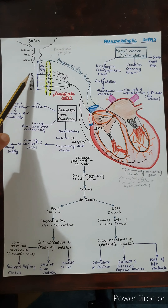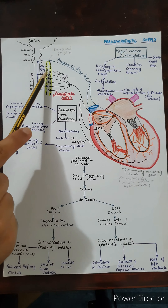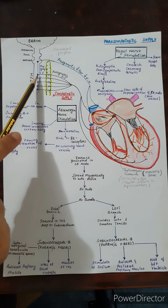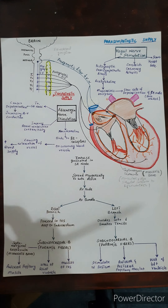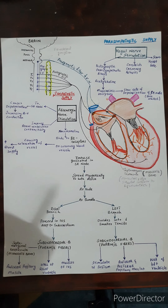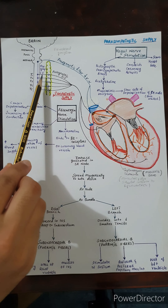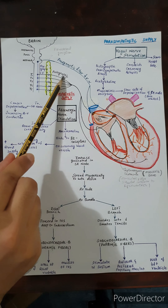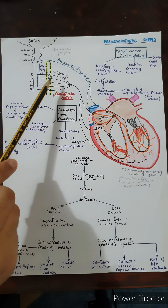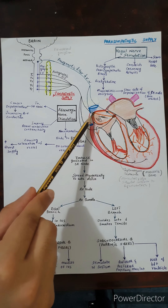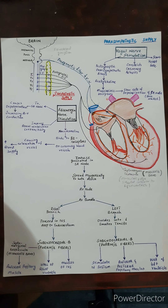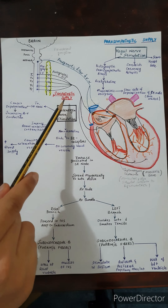The sympathetic fibers originate from the superior five thoracic vertebrae as presynaptic sympathetic fibers. The cell bodies of these presynaptic sympathetic fibers lie within the intermediolateral cell column, which forms the lateral horn of the spinal cord's gray matter. These presynaptic sympathetic fibers travel to the prevertebral ganglion, where the cell bodies of the post-synaptic sympathetic fibers lie. The post-synaptic sympathetic fibers innervate the SA node, AV node, myocardium, and coronary arteries of the heart.